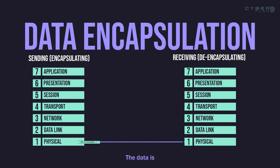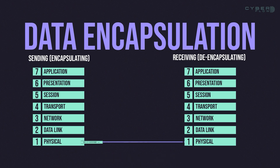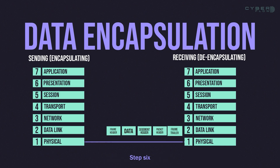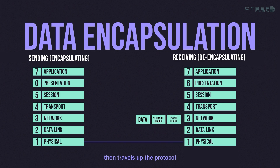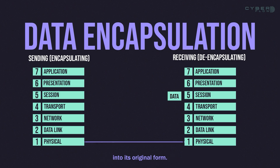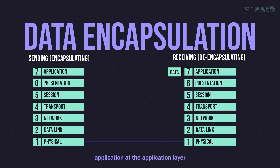Step 4: The data is then sent through the internetwork, which may consist of various types of media and intermediary devices. Step 5: The destination device receives the data at the network access layer of its protocol stack. Step 6: The data then travels up the protocol stack of the destination device, where it is decapsulated and reassembled into its original form. Step 7: The data is finally passed to the intended application at the application layer of the destination device.